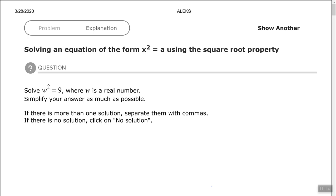It says solve w² = 9, where w is a real number. So we're looking for real number solutions here. We have w² = 9. We want to undo the square.